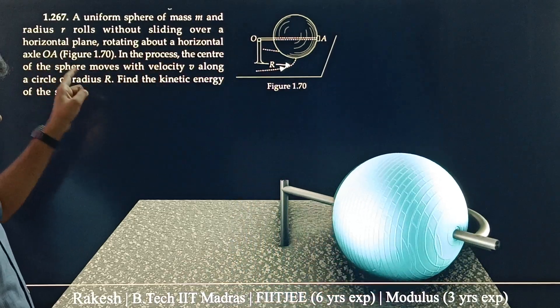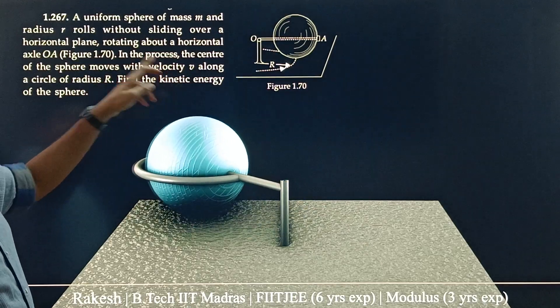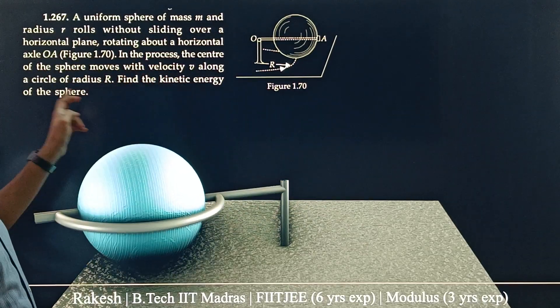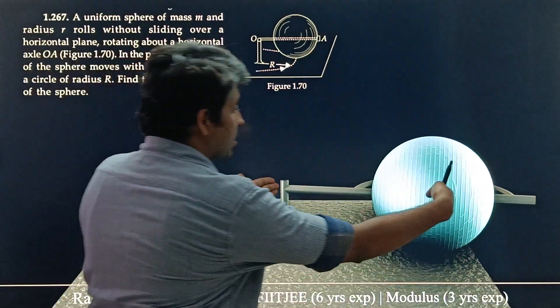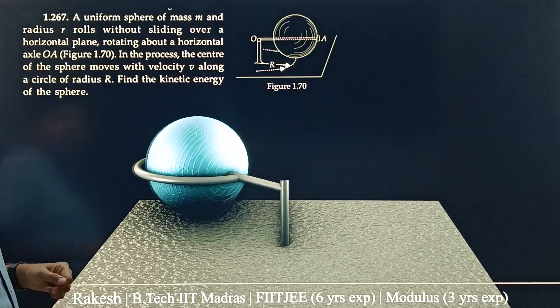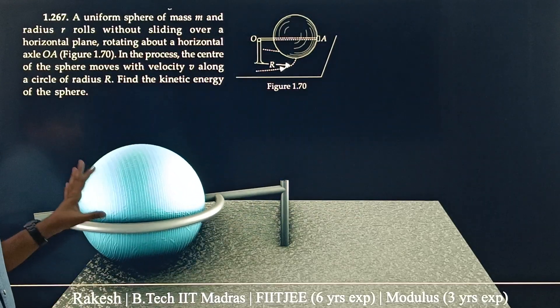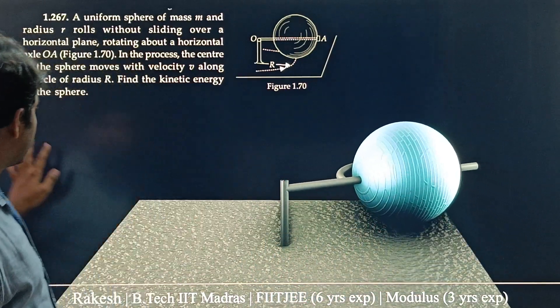About a horizontal axial OA, so about this axial OA it is rolling. In the process the center of the sphere moves at velocity V along a circle of radius R. So the center of the sphere is moving in a circle of radius R with velocity V. What is the kinetic energy of this sphere? We need to find the kinetic energy of this sphere.